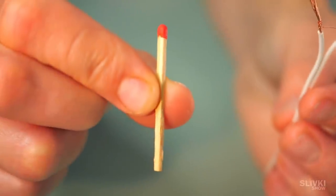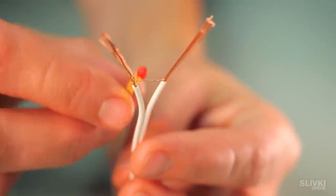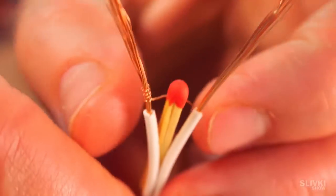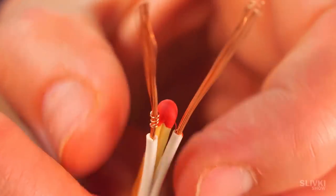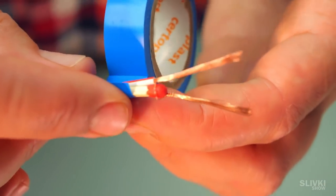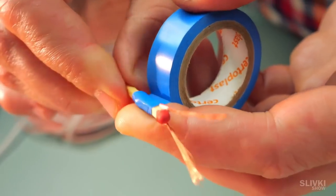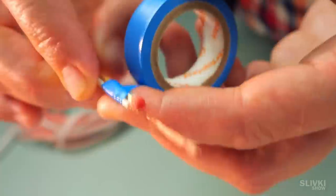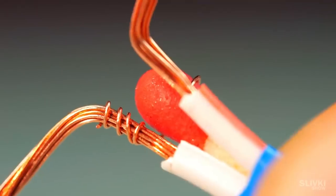Now we take an ordinary match and put it between the wires as shown in the video. The thin wire should touch the head of the match and wrap around it. Next we take blue duct tape and fasten the match and the wire together. We end up with a real remote detonator.